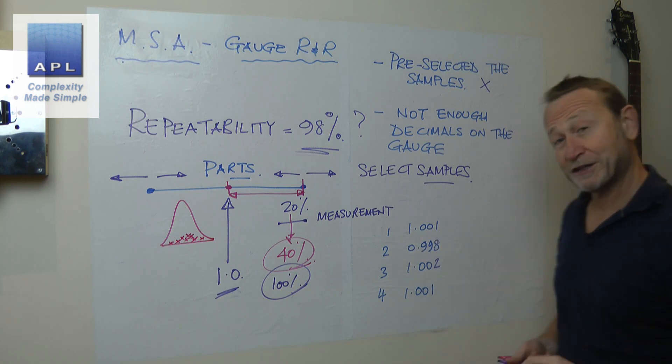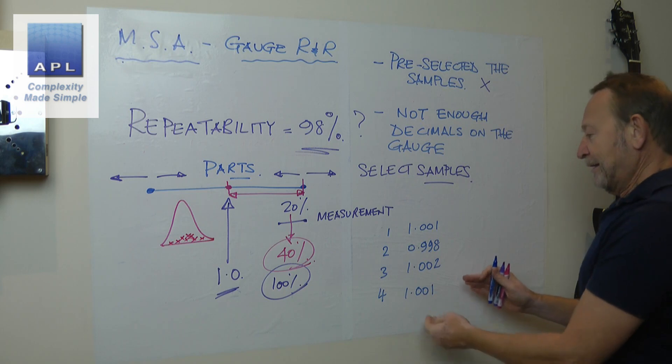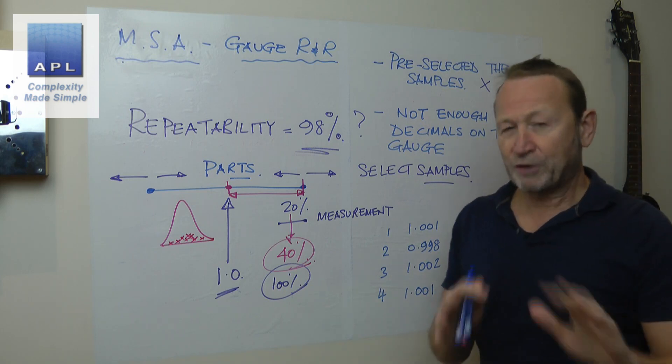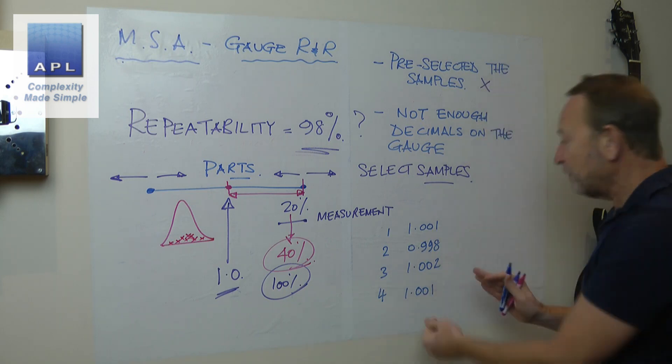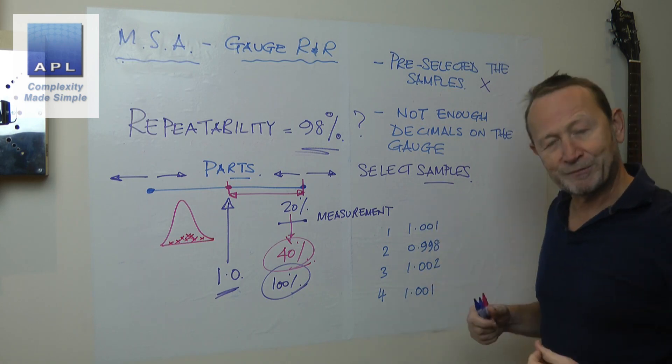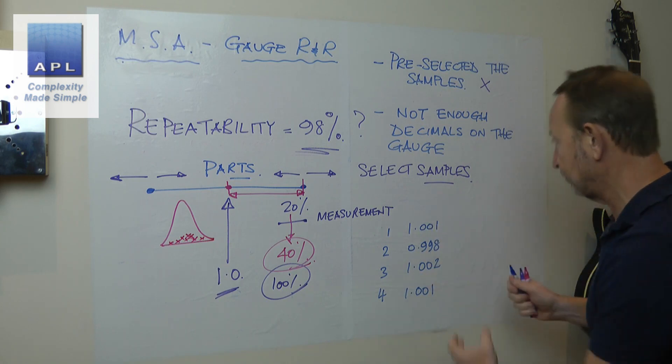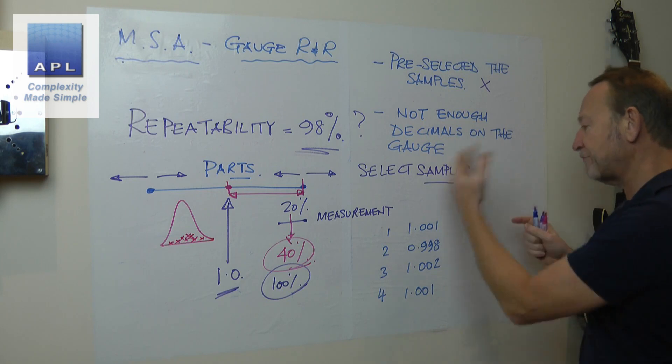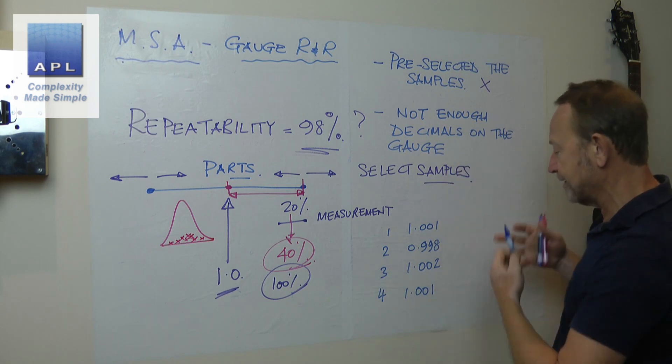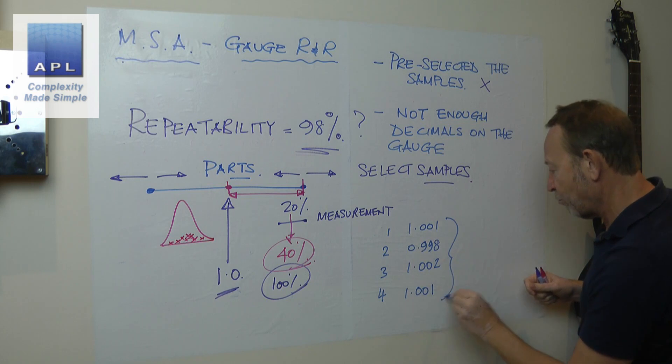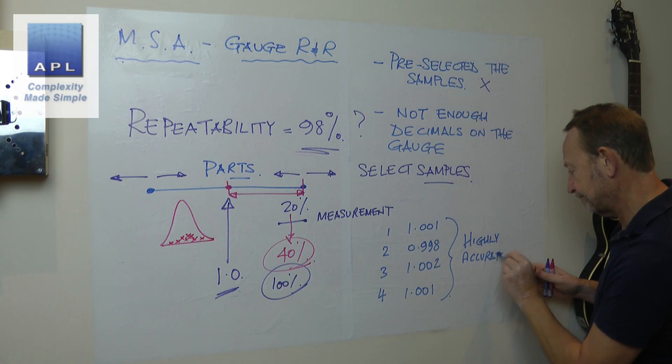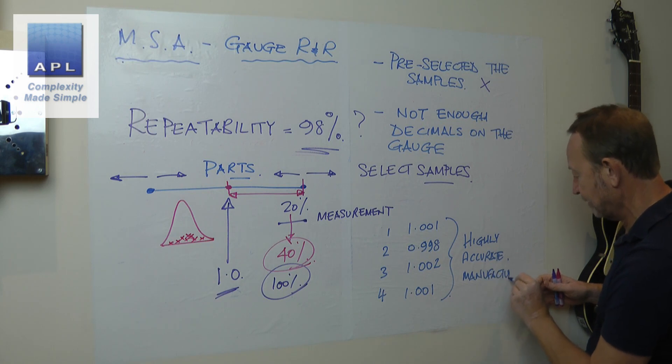Now, you may have rounded up, by the way. So if you've rounded these numbers up, that would be a mistake. You need to leave all the decimal places in place. That's really important to do. But if the decimal places don't actually exist, in other words, what you have is a highly accurate manufacturing process. You know, and these days, I deal with a lot of people who are measuring to microns.